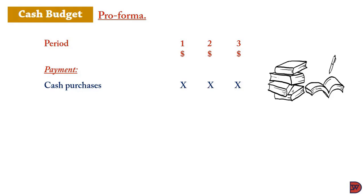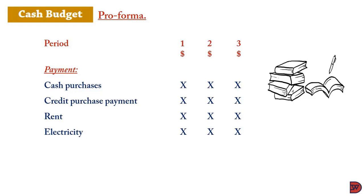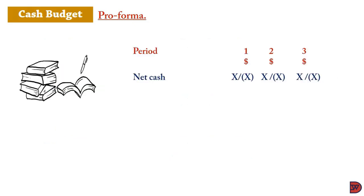For payments, any cash purchases are recorded under the respective periods they were expended. Credit purchase payments are recorded under the period where the money left the business, not where the liability was incurred. Rent payments are recorded in the year the payment was actually made. Electricity and other utilities are also recorded when paid, as are salaries. You then estimate the total payments.